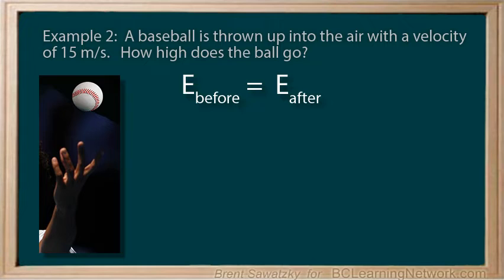In this case, the opposite is happening in that the ball has velocity at the beginning. So, it has kinetic energy on the left-hand side, e before. And, on the right, we know that it's high up at the top. So, it only has potential energy.